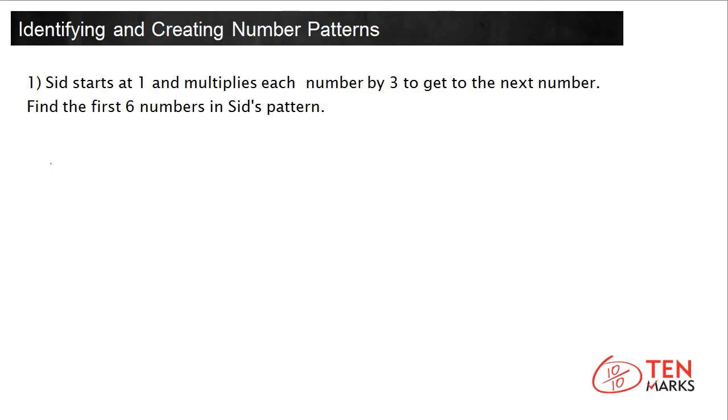Sid starts at 1, so the first number is 1. He multiplies each number by 3 to get to the next. The rule, which is the operations that happen to one number in the pattern to get to the next number in the pattern, in this case, is to multiply by 3.